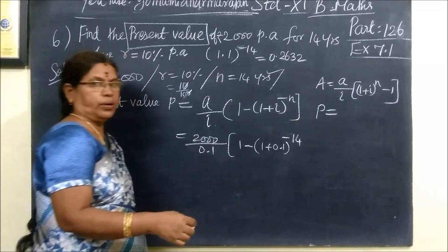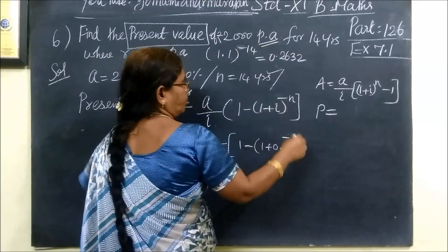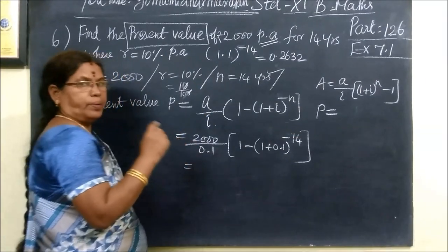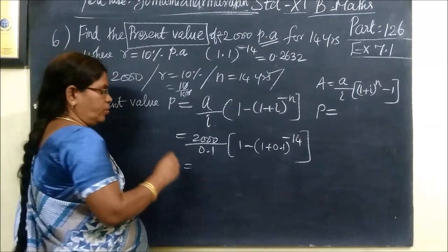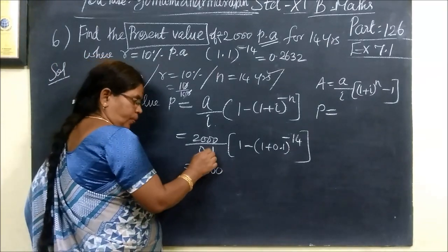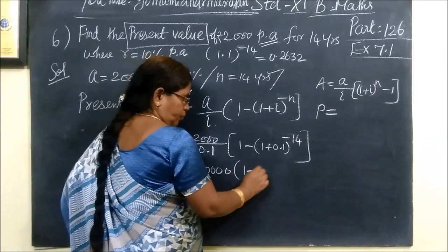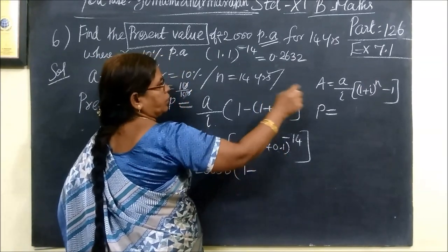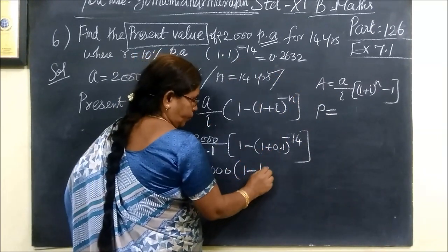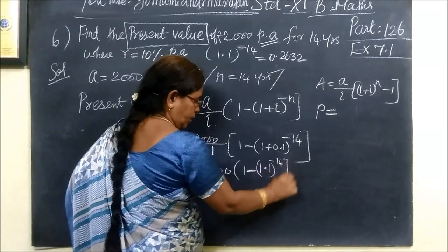That means per annum, year by year. This equals 2000 by 0.1, 1 minus value. Here it is 1.1, this is 1.1, to the power minus 14.